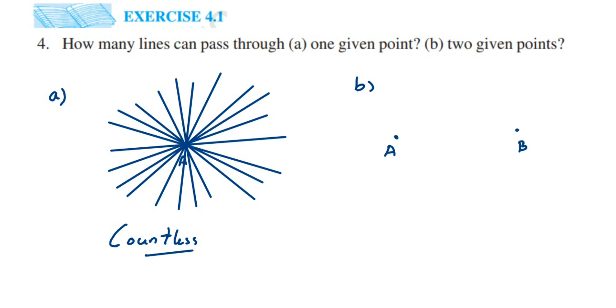How many lines can pass through it? You can see that only one line can pass through these two given points. Now I cannot... I can draw one line like this, but it is passing through only one point B. Similarly through this point I can pass only one line.